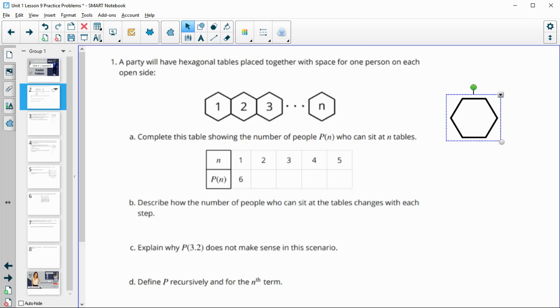Now, once you add in another table, you're taking away a space and we're adding more. So now instead of having six spaces, we have five, six, seven, eight, nine, ten spaces. So when we have two tables, we have ten spaces.